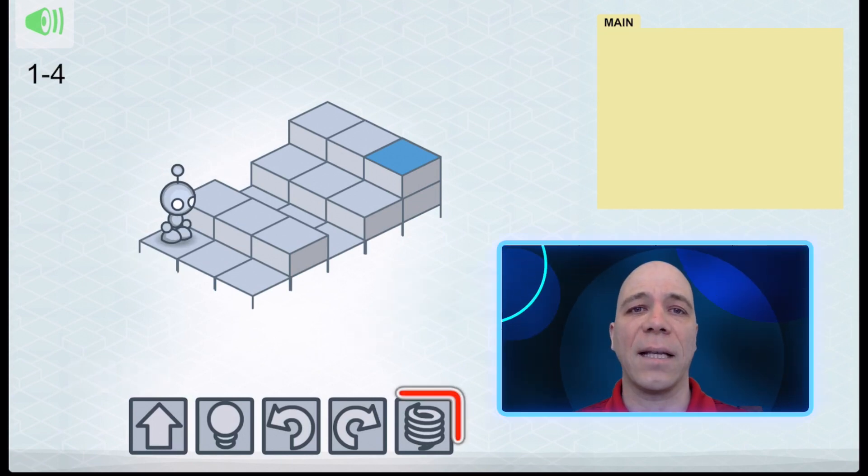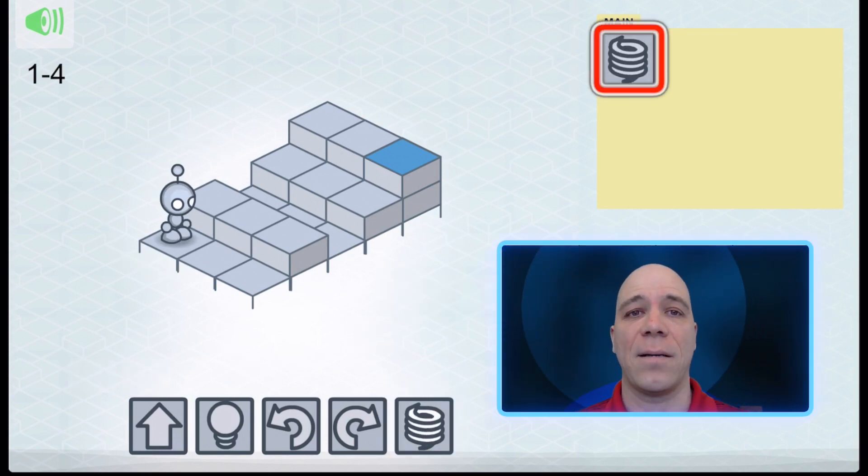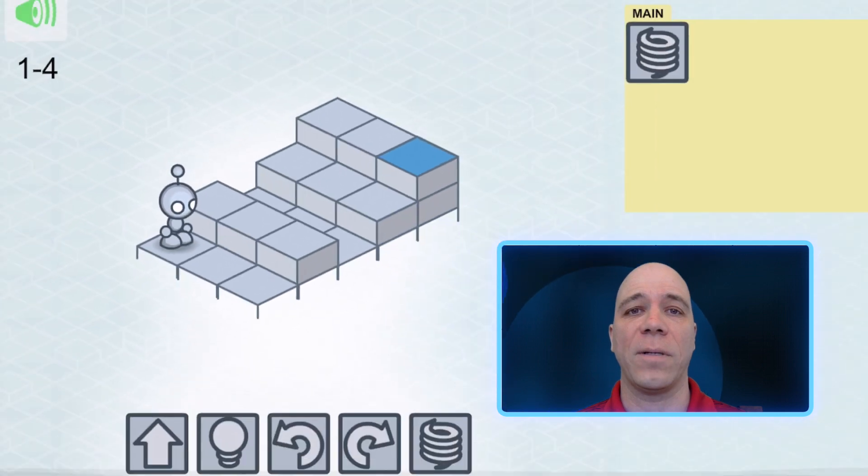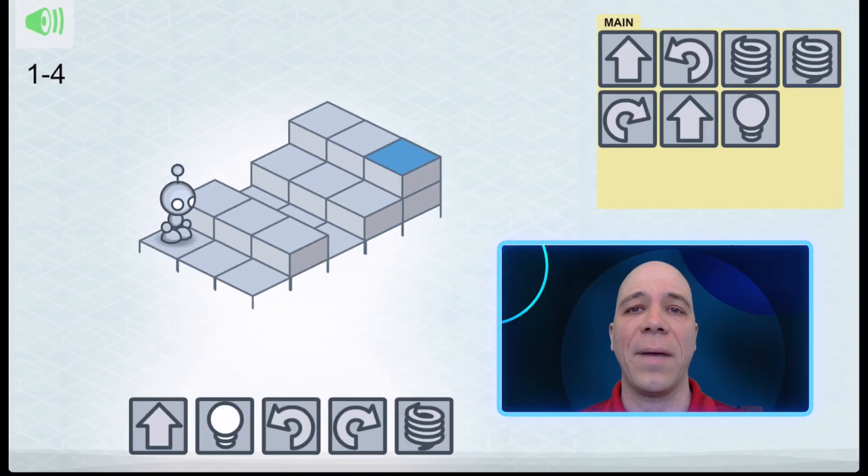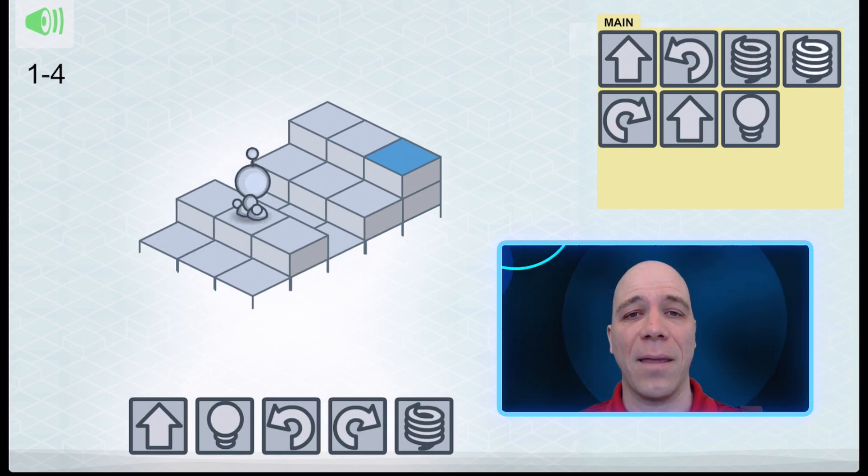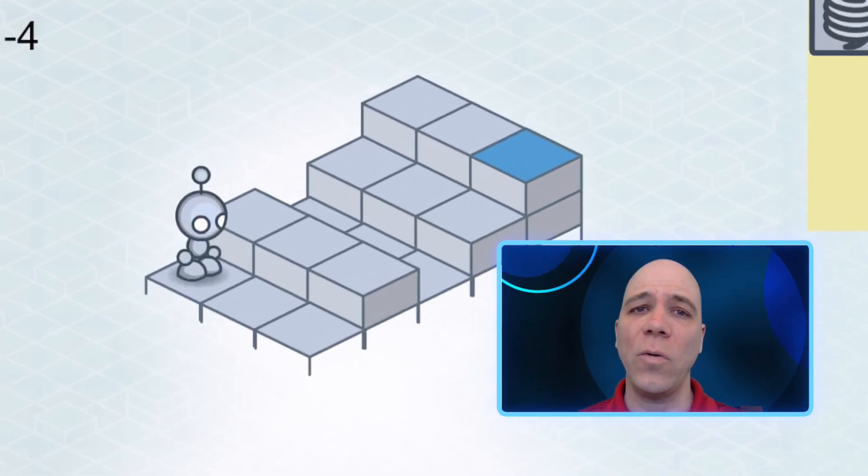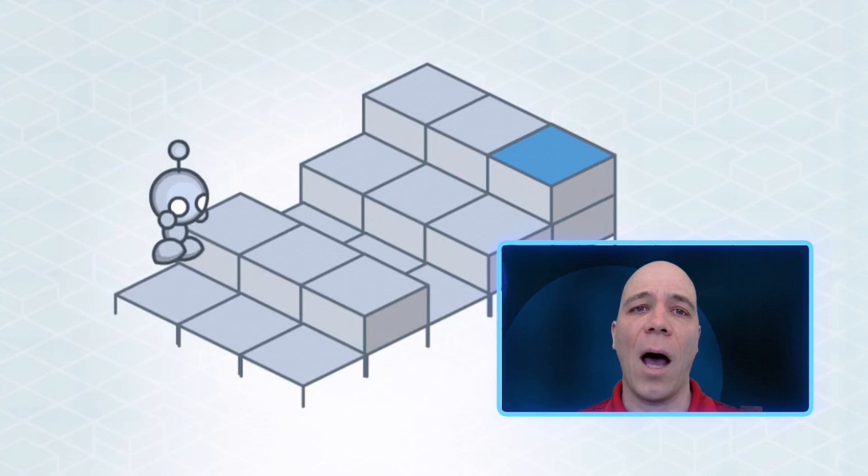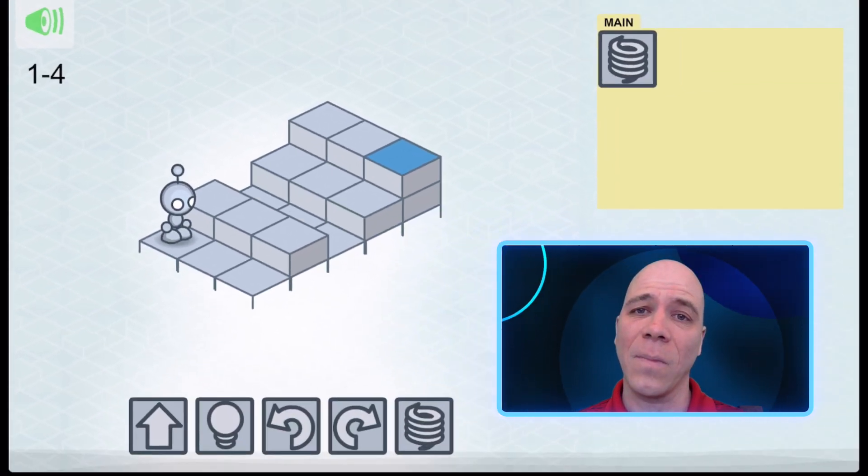The command that looks like a spring is the jump command. If there is a step in front of the robot when this command is given it will jump up or down onto the step like this. But if there is no step Lightbot will simply hop on the spot like this. Again you want to make sure the robot is looking in the right direction before trying to jump.